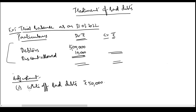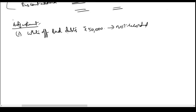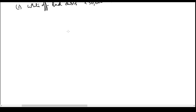In the adjustments, you are asked to write off bad debts of rupees 50,000. This write-off has not yet been recorded, so they are asking you to record it at the time of finalization of the final accounts. Let us start doing it — I will prepare a small profit and loss account.